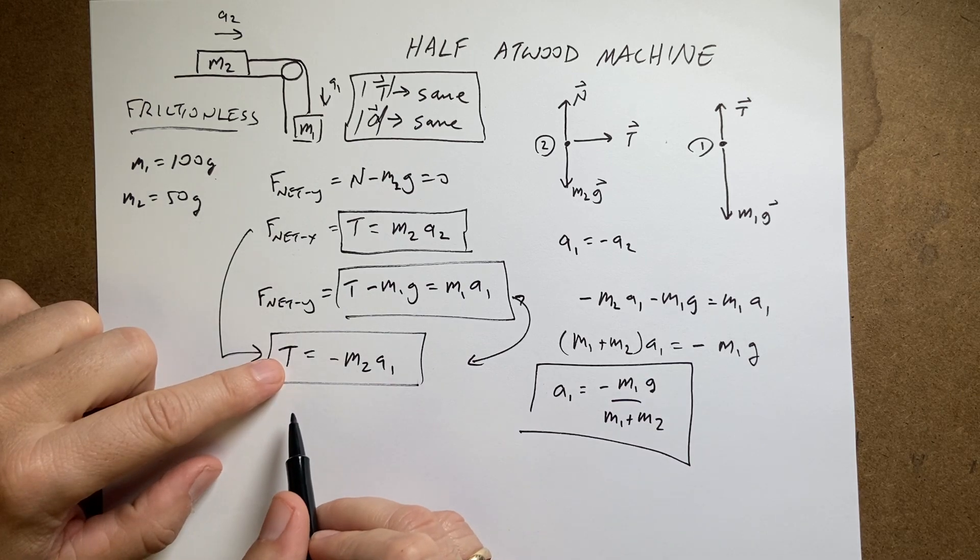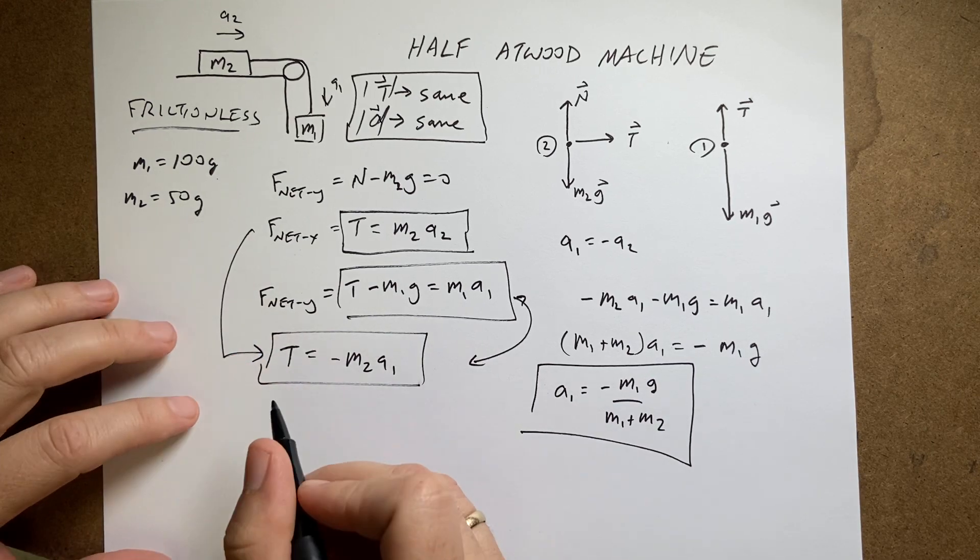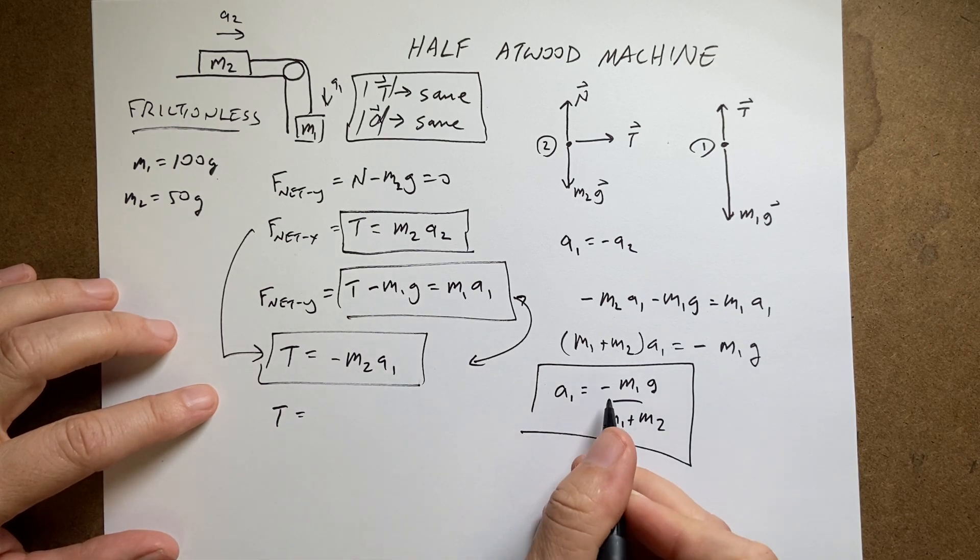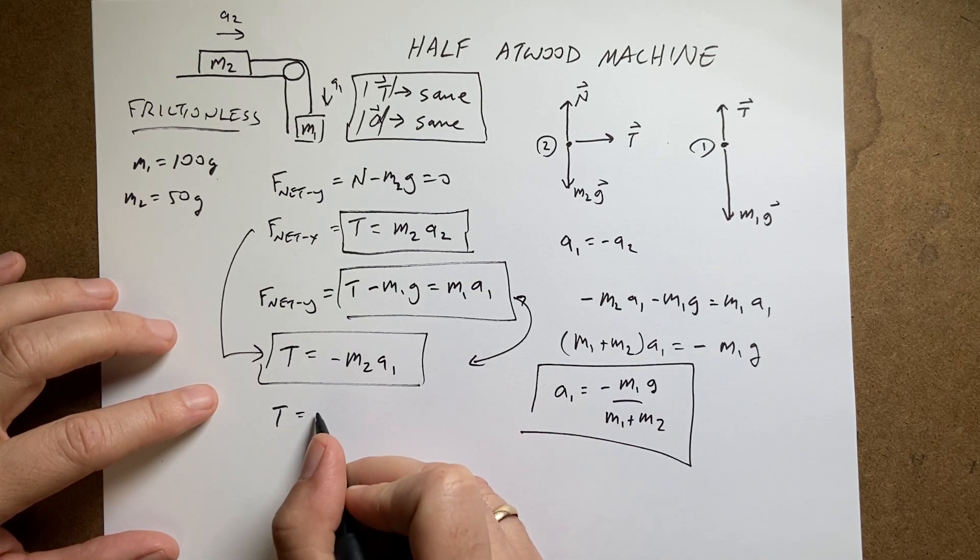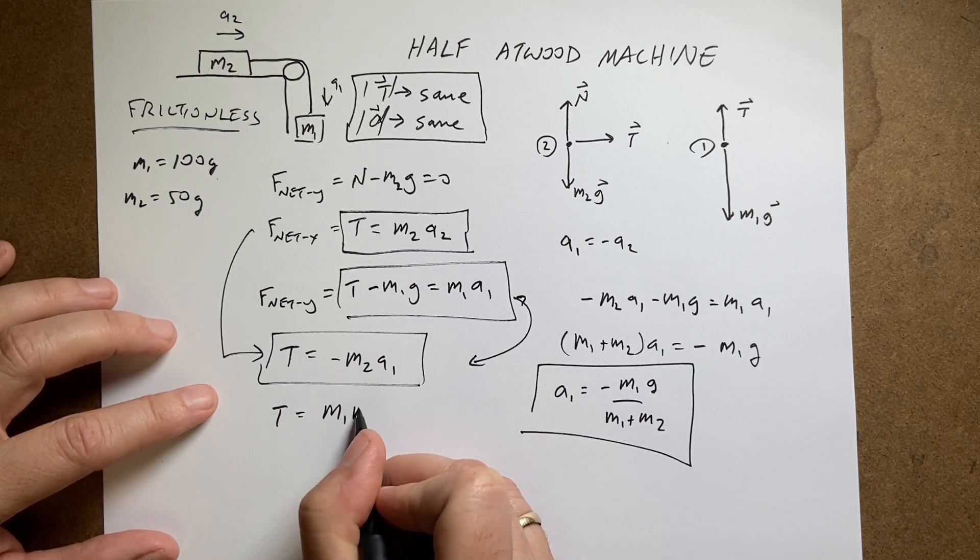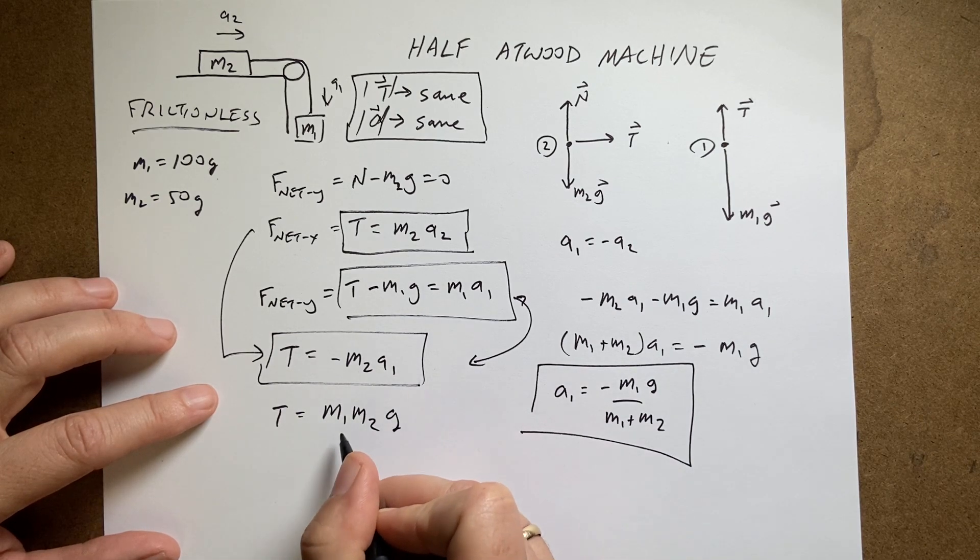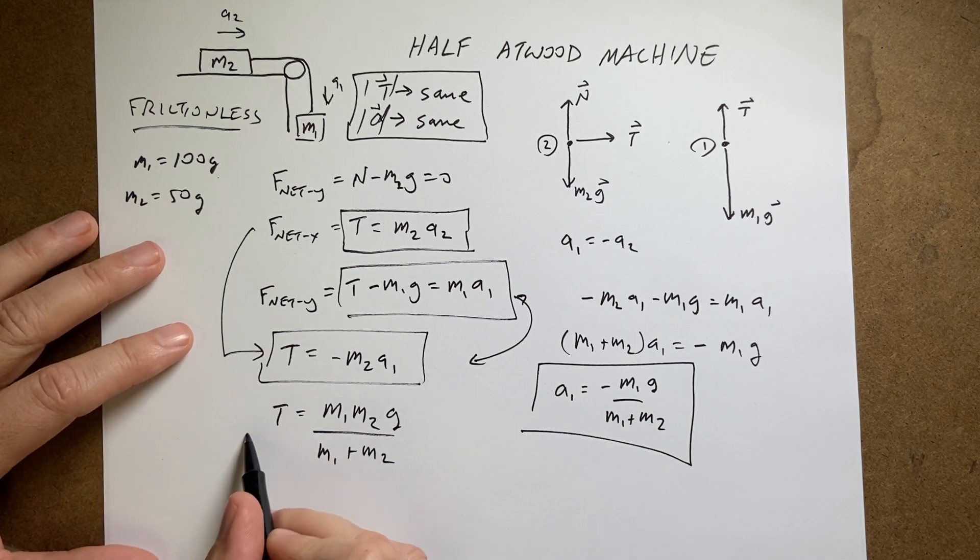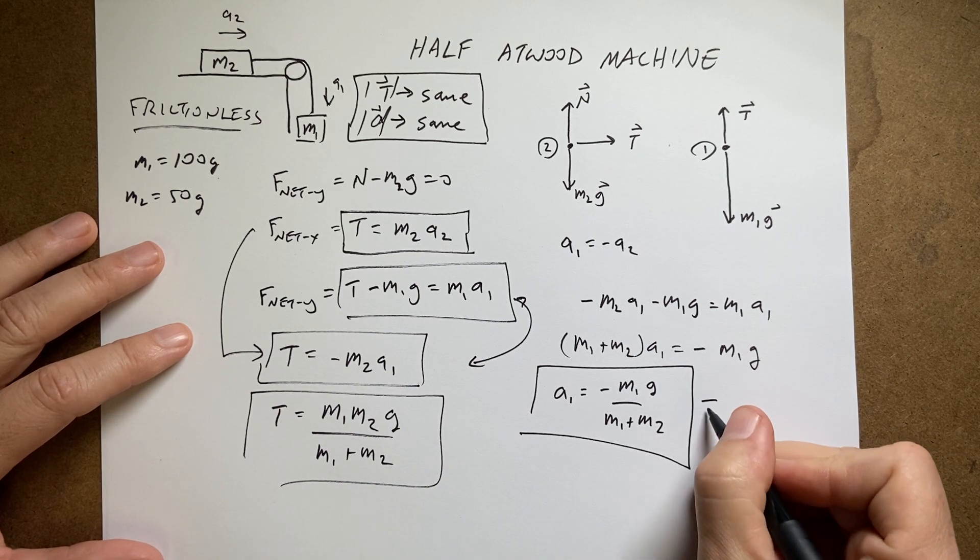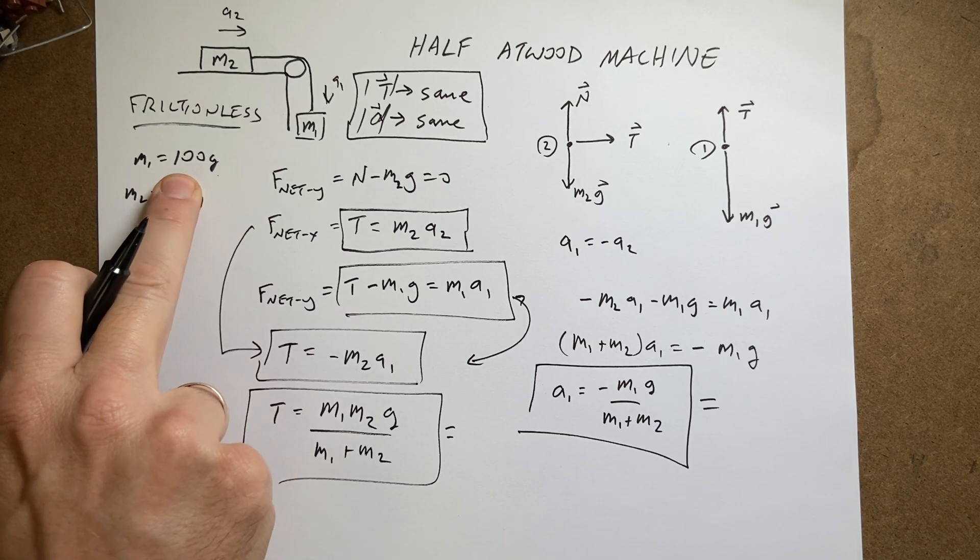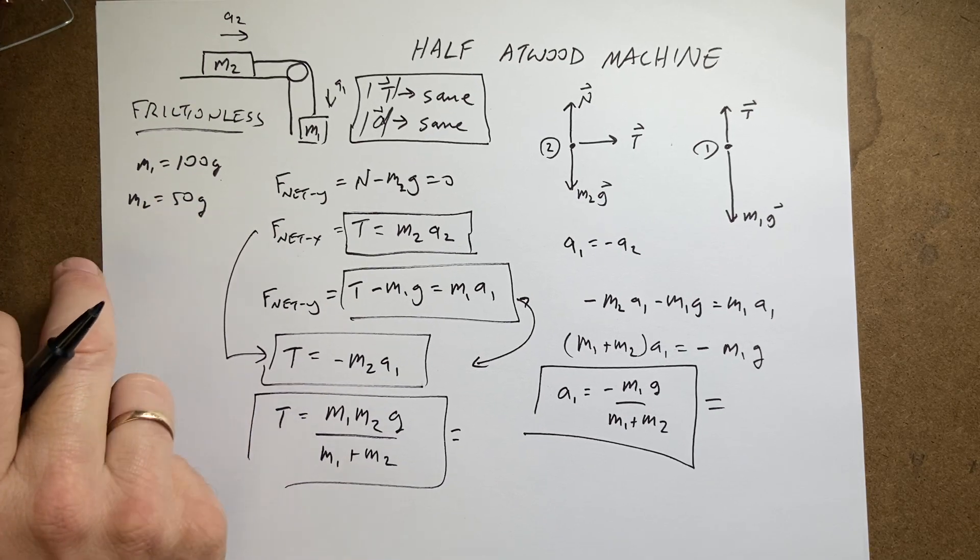And then if I want to find an expression for the tension, I can right here. I'm just going to put in my value for a1. I get t equals negative times negative. So I get positive m1m2g over m1 plus m2. Let's get some values here just because people like values. Remember I said I'm using 100 grams and 50 grams.